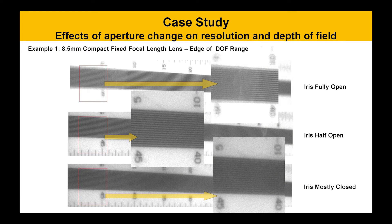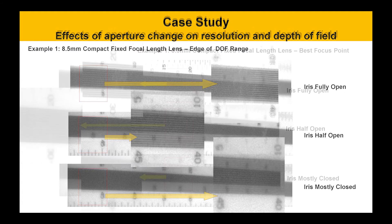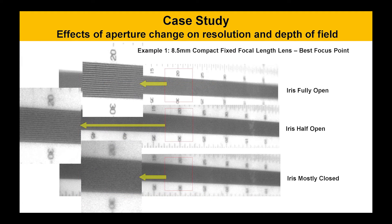In the first example, at the best focus position as we go through the iris settings, the resolution does slowly degrade over time — that's expected due to diffraction. We'll also notice that as we go through the iris settings at a different depth of field position, something closer to the lens system, the actual resolution does appear to get better to a point and then goes back down again because the overall diffraction of the system is being pushed and we're no longer able to get resolution.